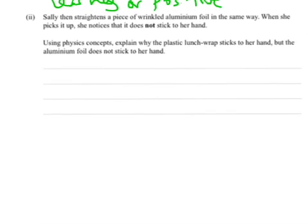Part two. Sally then straightens a piece of wrinkled aluminium foil in the same way. So we're dealing with aluminium foil in exactly the same situation. When she picks it up, she notices it does not stick to her hand.